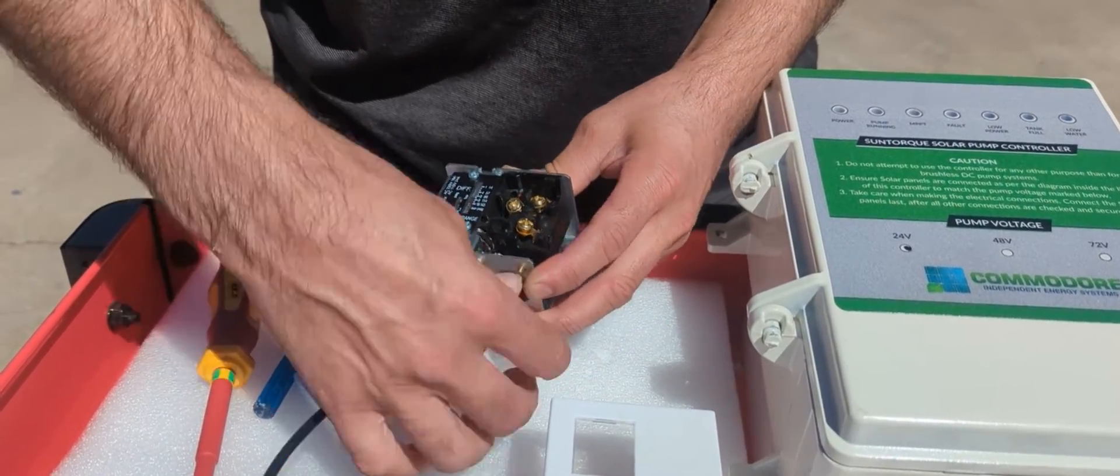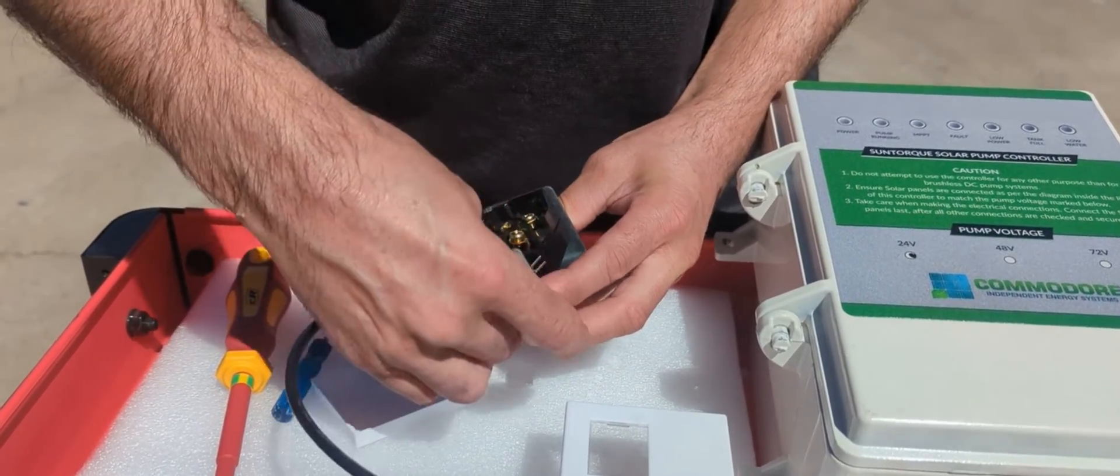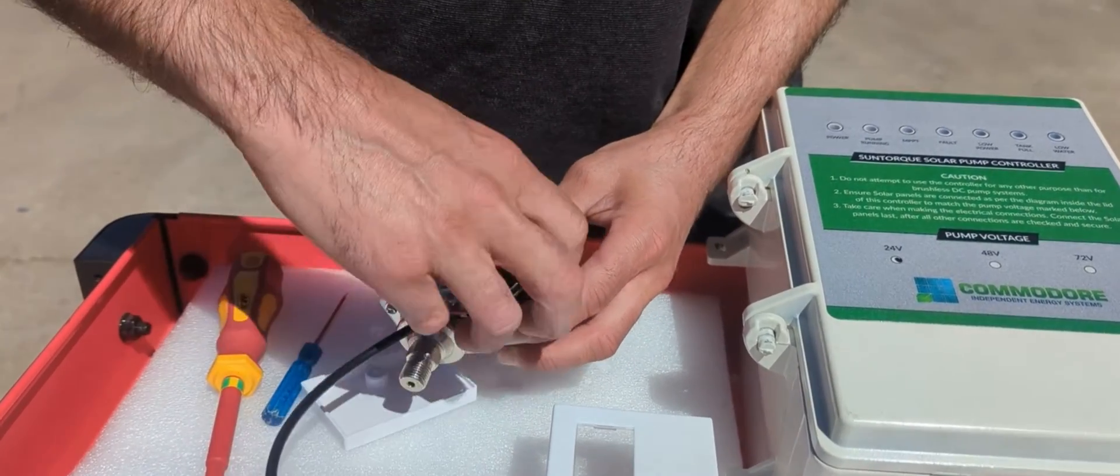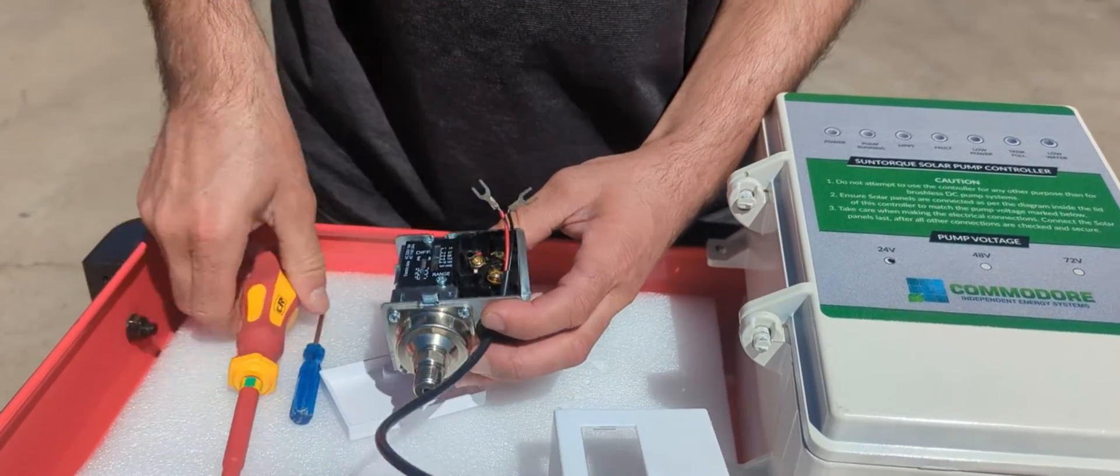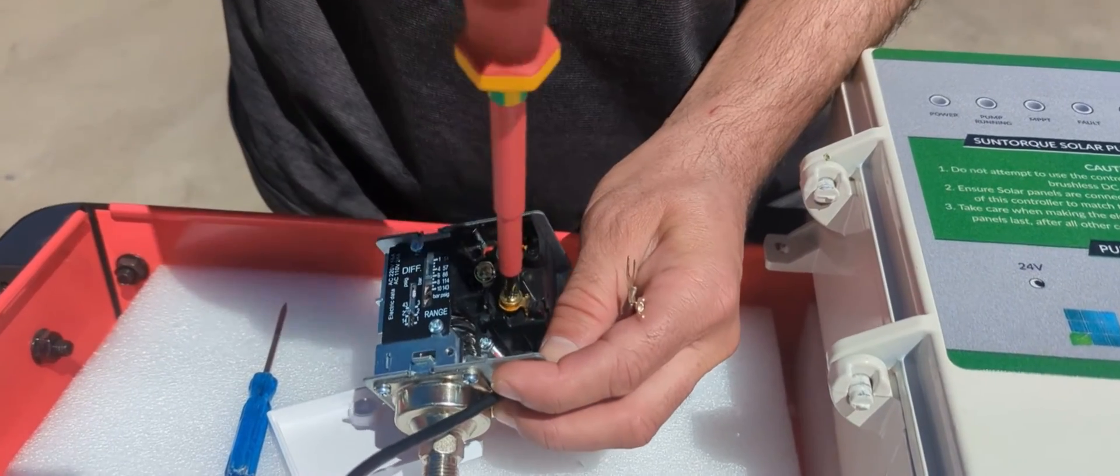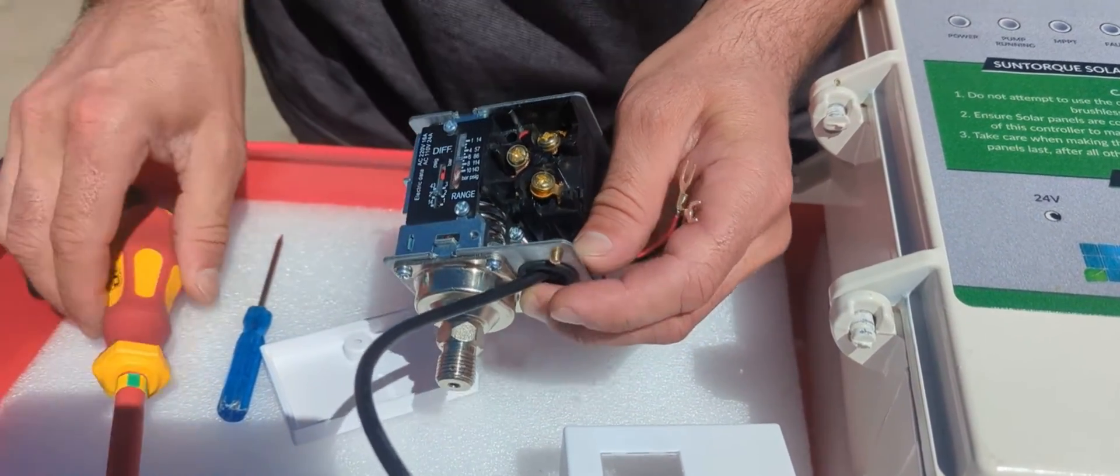Do one wire at a time because they can get a bit fiddly otherwise. Now you want to make sure you only loosen these screws off just a little bit. You don't want to do it to the point where it falls out.